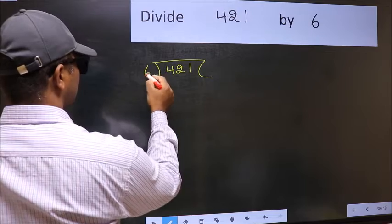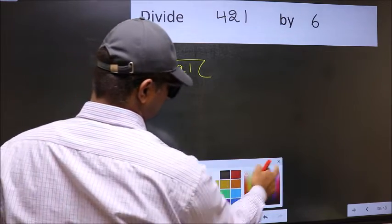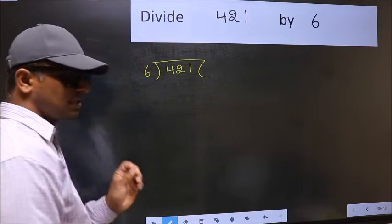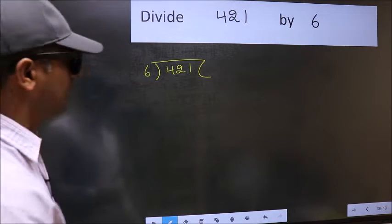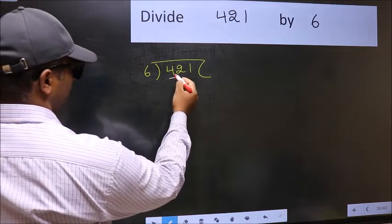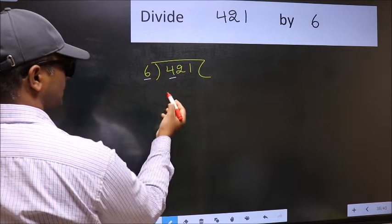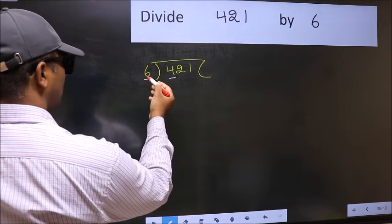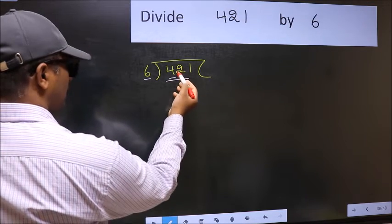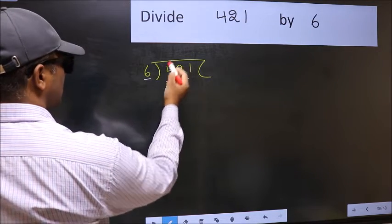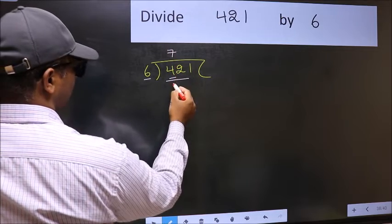Next, here we have 4 and here 6. 4 is smaller than 6, so we should take two numbers: 42. When do we get 42 in six table? Six sevens 42.